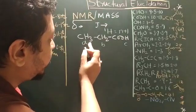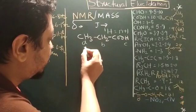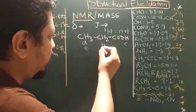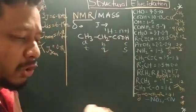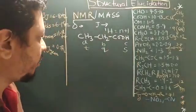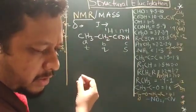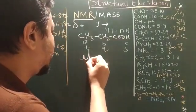For this peak will be split N plus 1, N is the neighboring proton is 2. So this will be triplet. For this B peak, it will be a quartet. And this remains as a single. So this splitting is very important like how the triplet will go. It is 1 is 2, 2 is 2, 2 is 2, 1.